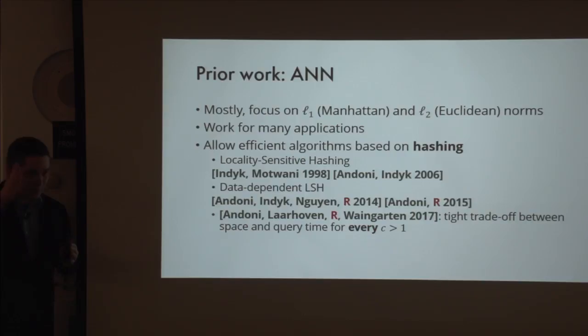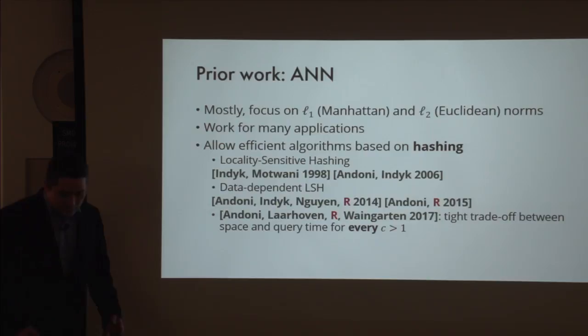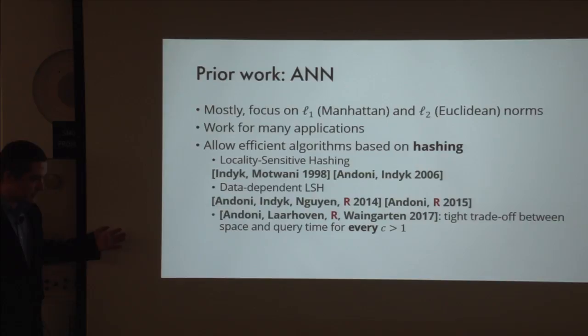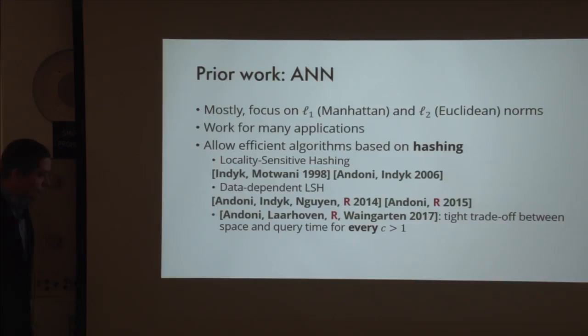For L_1 and L_2 the story is almost closed—there are still a few important open questions, but we have very good understanding. For L_2 you can use Johnson-Lindenstrauss for dimension reduction. For L_1 it's less trivial because there is no general dimension reduction for L_1, but you can do dimension reduction that respects one distance scale, and for nearest neighbor search that's enough. In our symmetric norms case, dimension will play a bigger role.